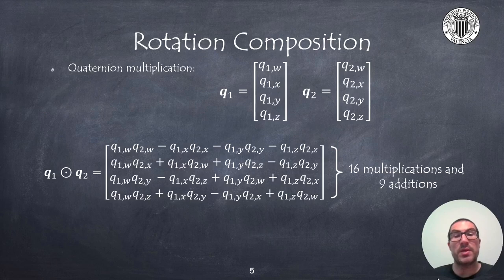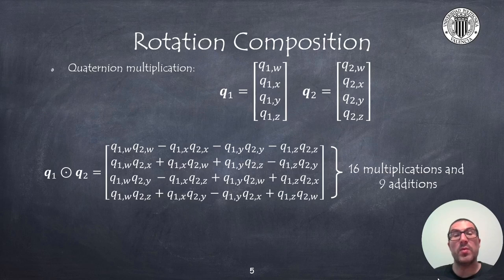The quaternion multiplication is equivalent to the rotation of one reference frame with respect to another one, and this is the basis of rotation composition. Given two quaternions — the first representing the orientation of a first reference frame and the second representing the orientation of a second reference frame with respect to the first — the orientation of the second reference frame with respect to the global frame is the multiplication of these two quaternions.